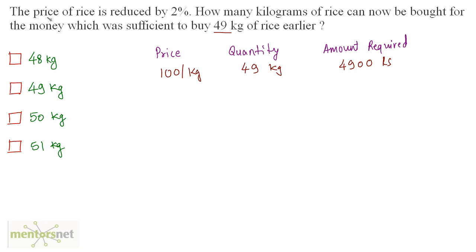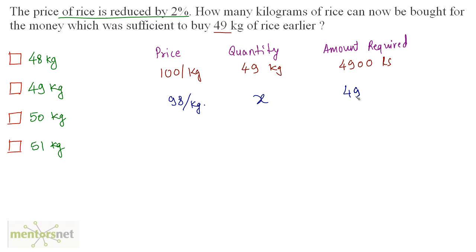It is said that the price of rice is reduced by 2%. So we are reducing the price by 2%, which means that the price now becomes 100 minus 2, which is 98 rupees per kg. Now we have to find the quantity if the amount remains the same — 4900 rupees.